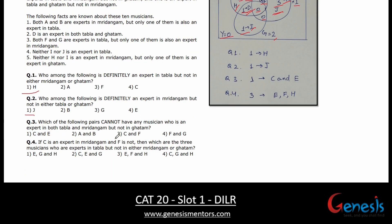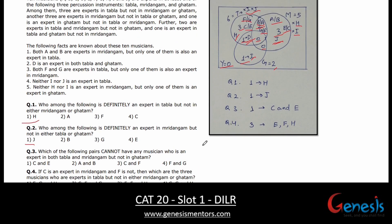Question 3: Which of the following pairs cannot have any musician who is an expert in both T and M but not in G? The T∩M region contains one of A/B and one of F/G. So the pair that cannot have such a musician would exclude both A,B and F,G — the correct answer option is C and E.